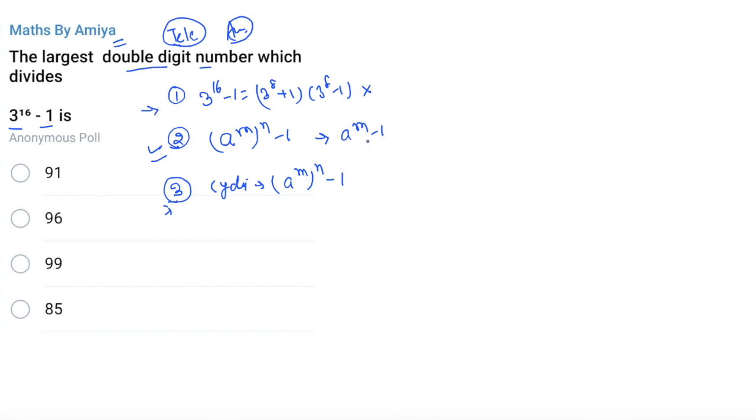We have 3 raised to power 16 minus 1. Is there any option in 3 raised to power something minus 1 or plus 1? There is no case of 3 raised to power something plus minus 1. If you are using cyclicity, the first condition is numbers should not be the multiple of 3. It means these two are co-prime.